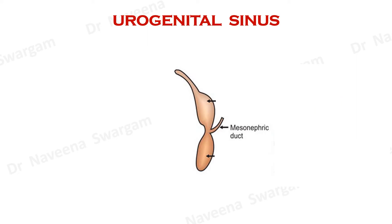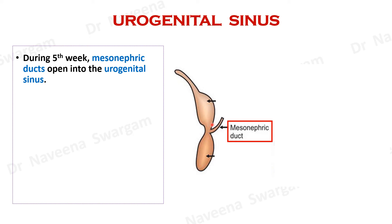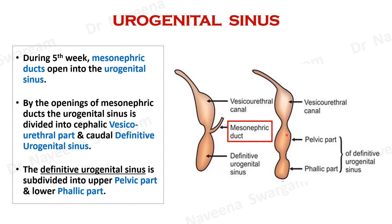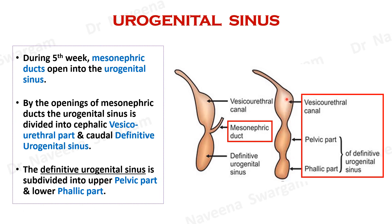While the urorectal septum is developing, mesonephric ducts within the lateral folds of the septum grow ventrally and open into the urogenital sinus through its dorsal wall, so that the urogenital sinus is divided into two parts: cephalic vesico-urethral part and caudal definitive urogenital sinus. In later stages, the definitive urogenital sinus further divides into two parts: upper pelvic part and lower phallic part. By the end of the fifth week of development, the urogenital sinus shows three parts from cephalic to caudal: vesico-urethral part, pelvic part, and phallic part.